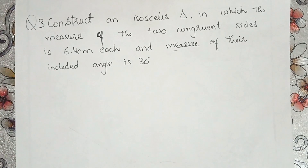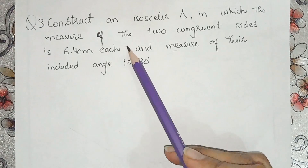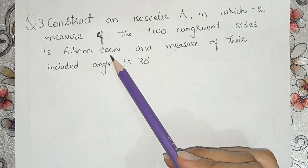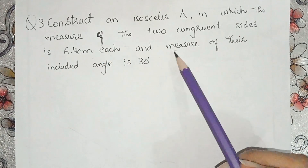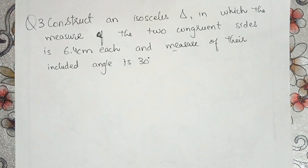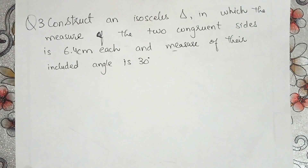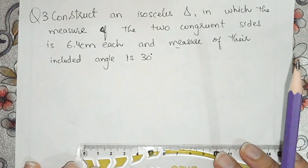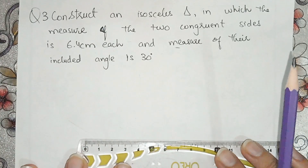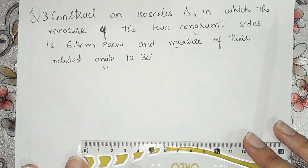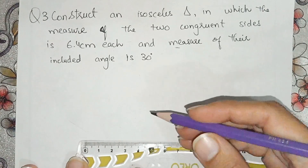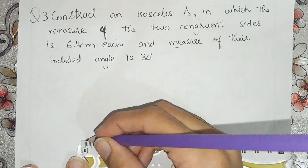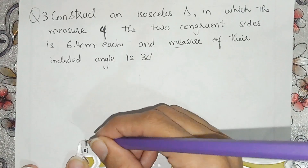Now question number 3: construct an isosceles triangle in which the measure of the two congruent sides is 6.4 cm each and the measure of their included angle is 30 degrees. The sides are 6.4 cm and the angle is 30 degrees. Let's draw a line of 6.4 cm.